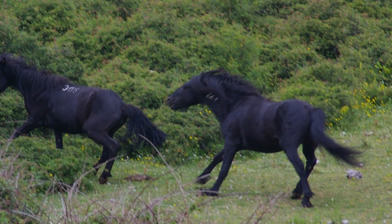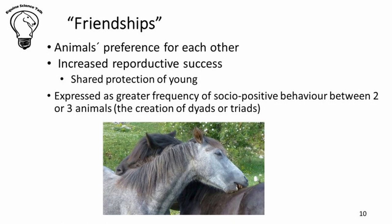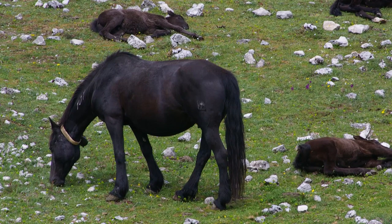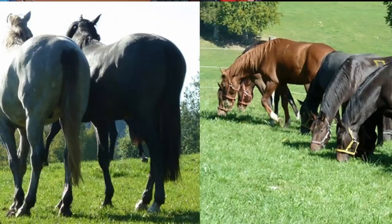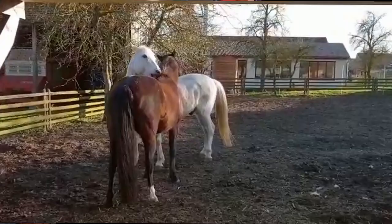When talking about bonded groups, we could talk about friendships comparable to those of humans, but that would be rather anthropomorphic. So instead we talk about a socially bonded group or preferred social partners. Within such groups we see socio-positive behaviors such as mutual grooming, and there are particular advantages for members — such as higher breeding success rates and the sharing of babysitting, that's to say looking out for the foals of group members together.